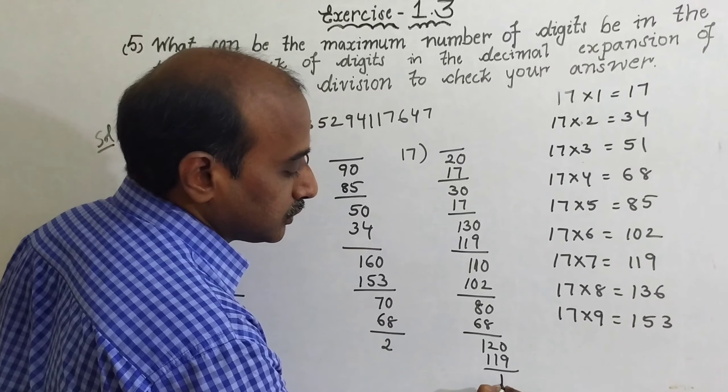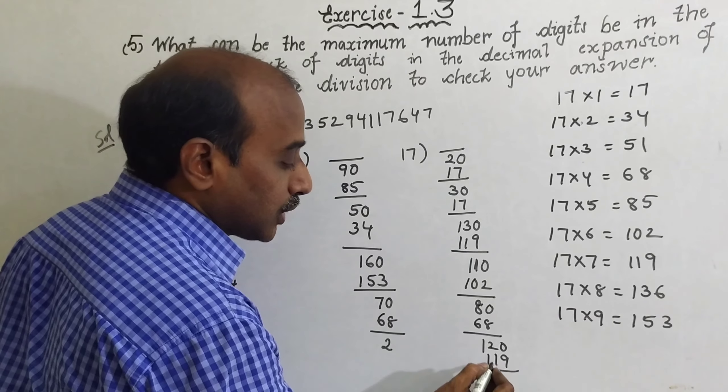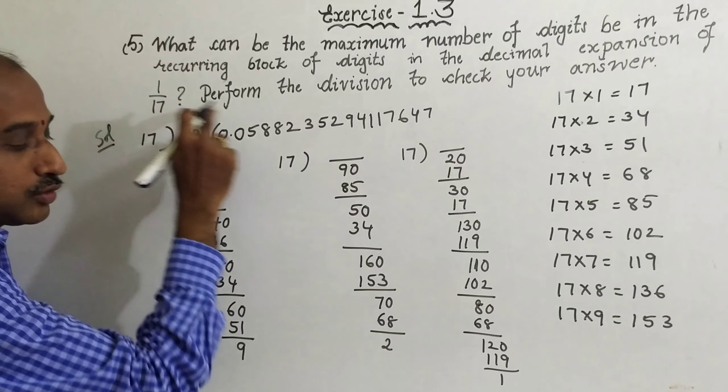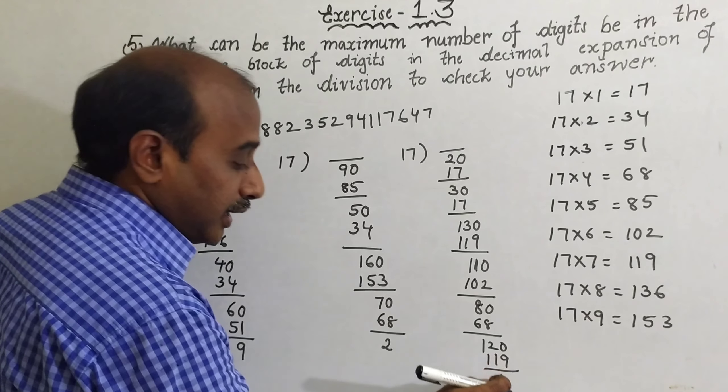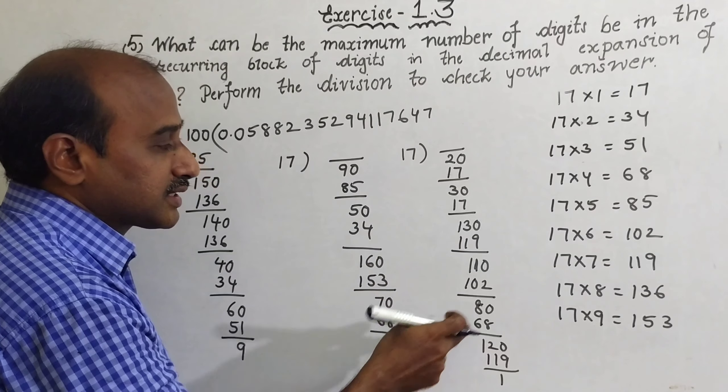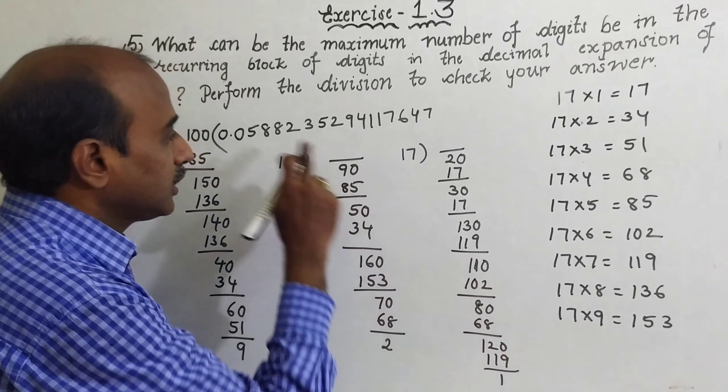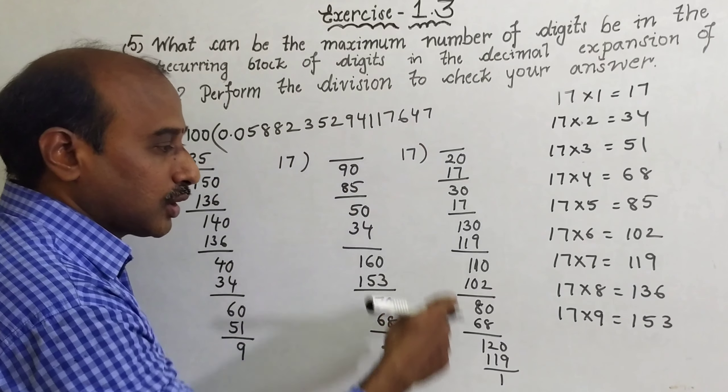You can observe, now we are getting whatever 1 is there in the numerator, you are getting again. This process will repeat similarly. Again you are taking 0, again 0, then it will cut same numbers continuation.